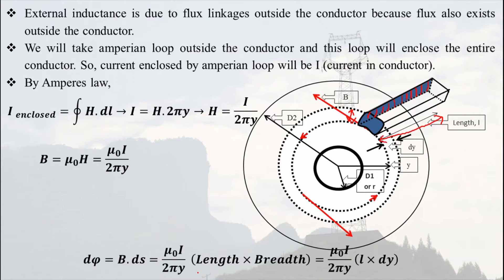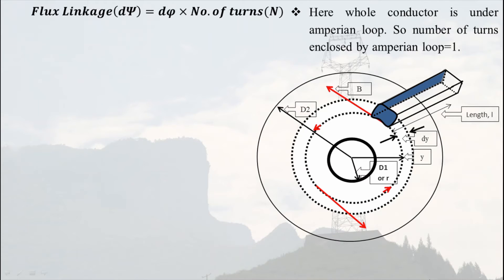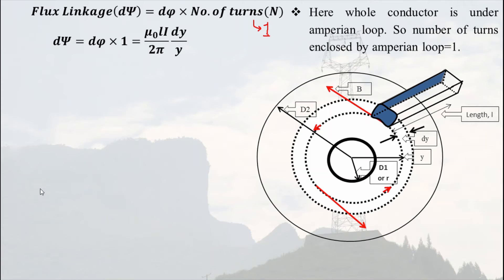We can write dφ = B·dS = (μ₀i / 2πy) · l · dy. Now, flux linkage dΨ = dφ × number of turns. This whole conductor can be treated as a single turn, and the Amperian loop encloses the entire conductor, so the total number of turns n = 1. Therefore dΨ = dφ × 1 = (μ₀li / 2π) · (dy/y).